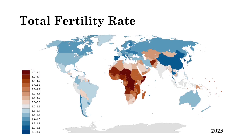A global map showing total fertility rates at a national scale reveals that less developed countries, particularly in sub-Saharan Africa and parts of Asia, have higher TFRs. More developed countries in Europe, Eastern Asia, and parts of North America show lower TFRs.